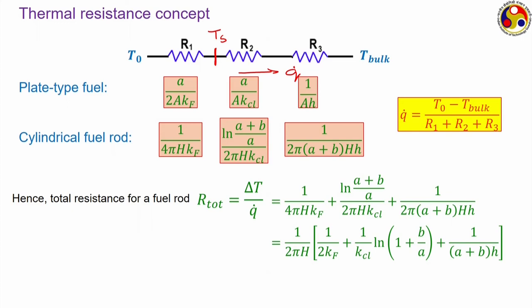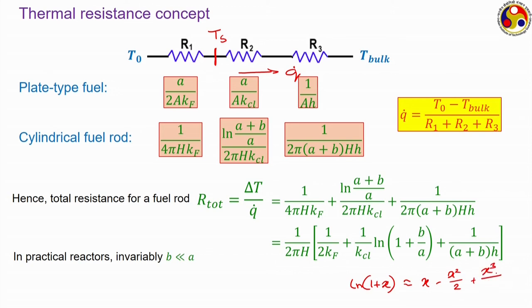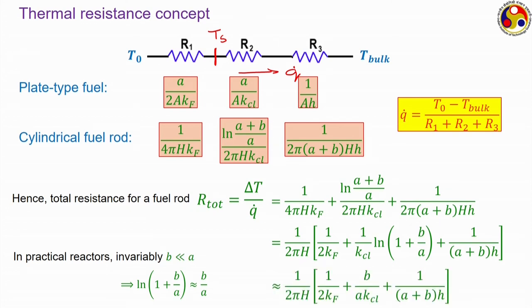We can factor out 2πh to get a simplified form. For most practical reactors the cladding thickness is extremely small compared to the radius of the fuel itself. When B is much smaller than A, we can use the expansion ln(1 + x) ≈ x for small x, so ln(1 + B/A) ≈ B/A, neglecting second-order terms and above. Accordingly the resistance equation simplifies to a much simpler form, and this total resistance is an important quantity to know.